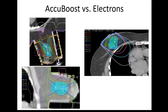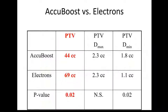Looking at three-dimensional dosimetric planning comparing AccuBoost versus electrons, we saw something remarkable: for the same degree of target coverage, AccuBoost resulted in a PTV volume that was a third smaller than that achieved with electrons — a significantly smaller volume of normal breast tissue exposed to high dose for the same target coverage.